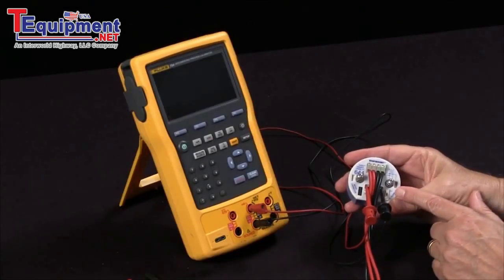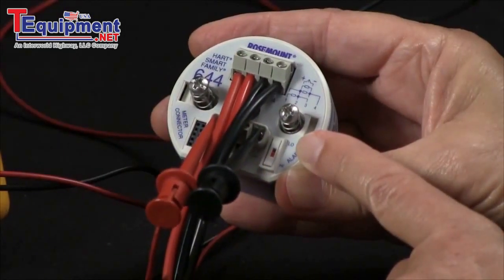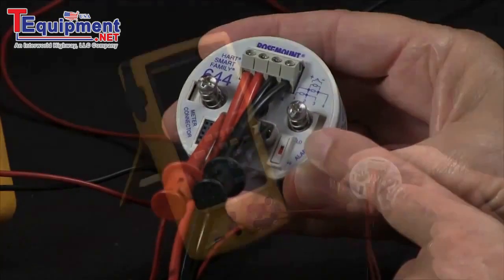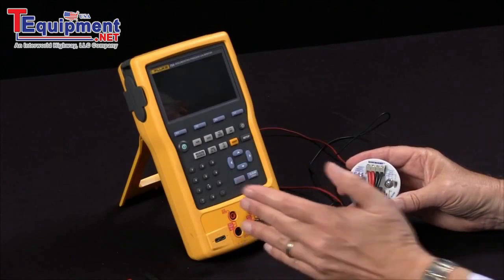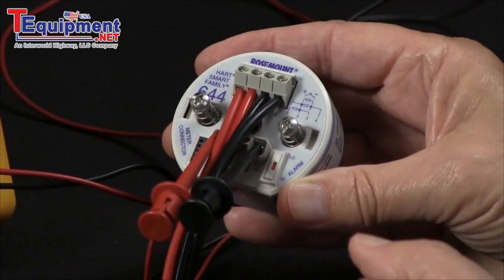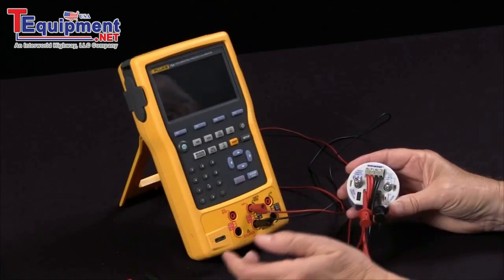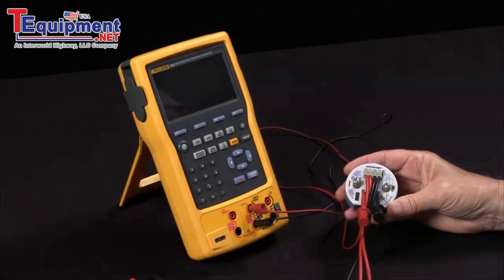We have a 4-wire platinum 100 ohm RTD transmitter that we're going to be using today, and we're going to use the Fluke 754 documenting process calibrator to source RTD to this transmitter and let it measure it. You'll notice that it's configured as a 4-wire device, so we bring the four wires out and jump them together at the end with stackable connectors.